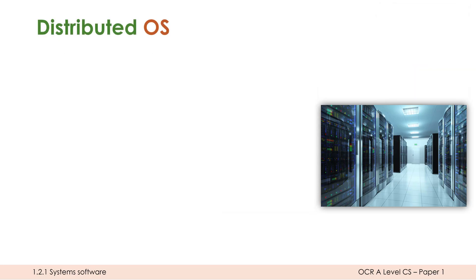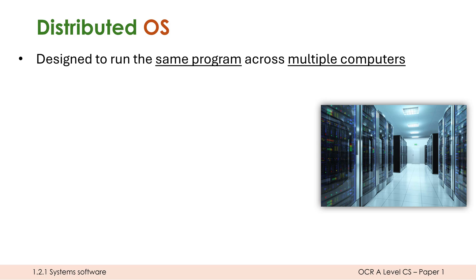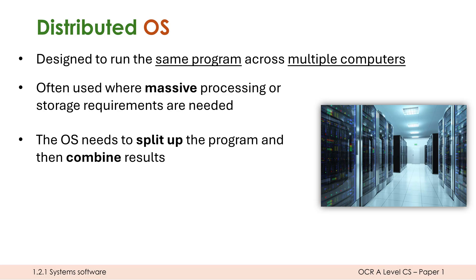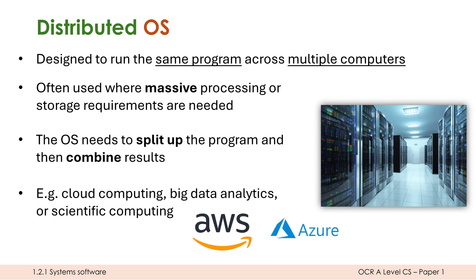Another OS type involving servers is the distributed OS. These are designed to run the same program across multiple different computers, distributed across servers. We need these when there are massive processing or storage requirements a single computer can't handle. It's a complicated OS — it must split up the program, distribute it to each computer, remain in contact with them, and combine the results. These are used for cloud computing such as AWS and Microsoft Azure, analytics on very large datasets, and scientific computing where splitting across thousands of computers makes tasks computationally realistic.